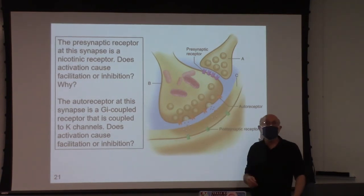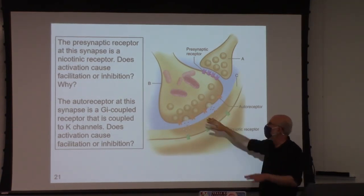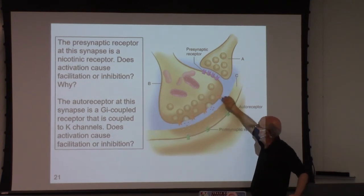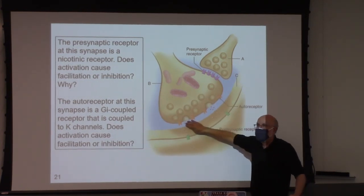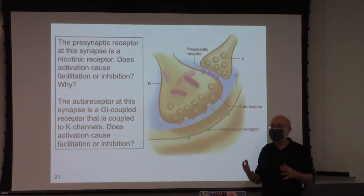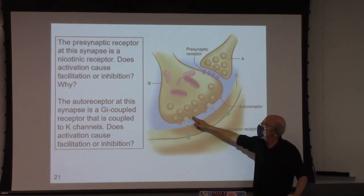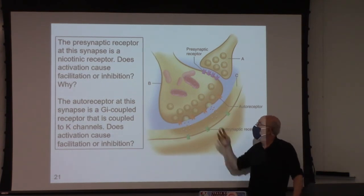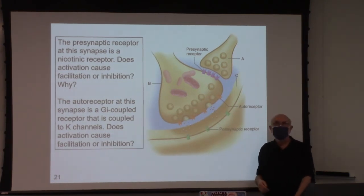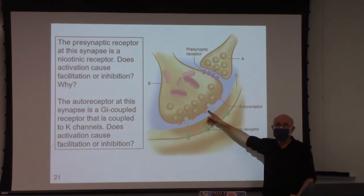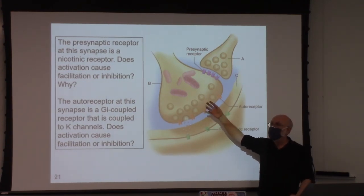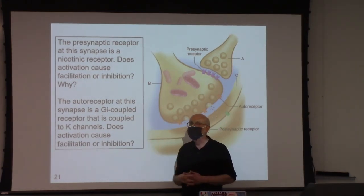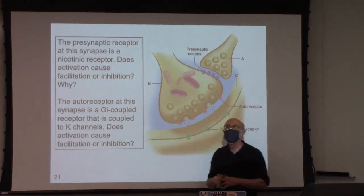Most autoreceptors are inhibitory. They're sort of an automatic control: if you release a lot of neurotransmitter into the cleft, we don't want too much — these autoreceptors are a braking system on neurotransmitter release. But in principle, there could be autoreceptors that facilitate, if they were coupled with GS instead of GI — though that's not common.